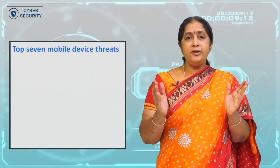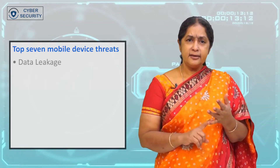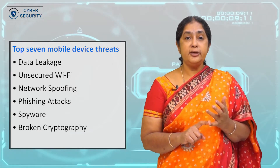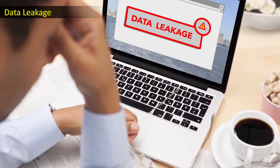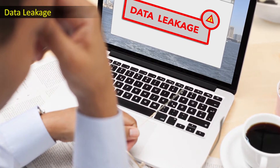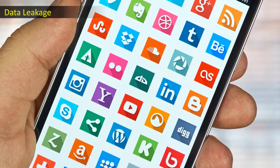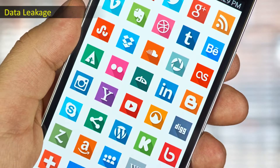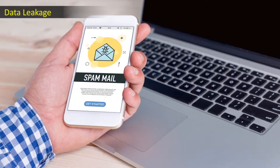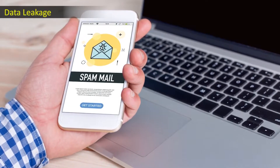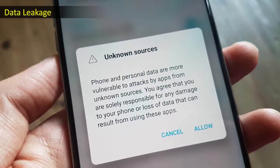The top seven mobile device threats are: data leakage, unsecured Wi-Fi, network spoofing, phishing attacks, spyware, broken cryptography, and improper session handling. Data leakage refers to leaking confidential data without any specific intention, and takes place mainly through mobile apps — mostly free apps that are officially advertised in the application market — which leak personal and organizational data.